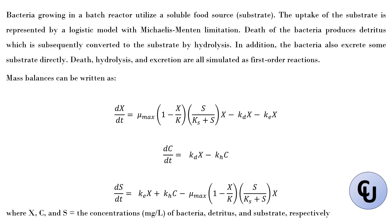You have the mass balances given here. The rate at which the concentration of the bacteria changes over time is given by dX/dt, and the balance is this. For the detritus, it's given as dC/dt, and for the substrate it's given as dS/dt. So you have these three differential equations to solve in GPROMS.